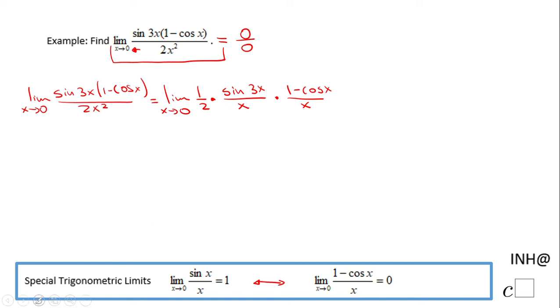Then I'm going to need a 3 here so I can have sine of 3x over 3x. So basically, I'm going to multiply by another 3 here to keep this equality. And now I can break this limit of a product into a product of limits. I'm going to have 1 half times 3, and then the limit when x approaches 0 of sine of 3x over 3x times the limit when x approaches 0 of 1 minus cosine x over x.